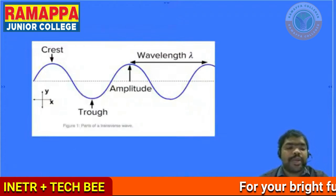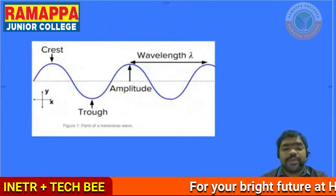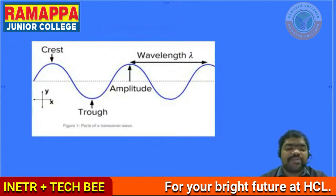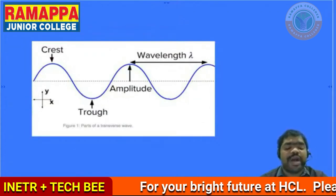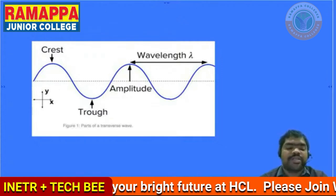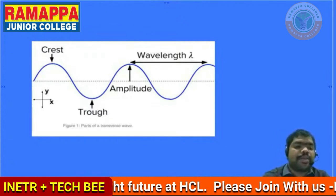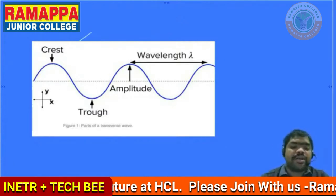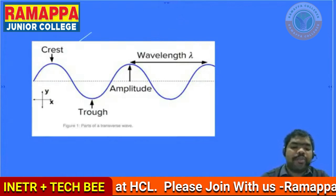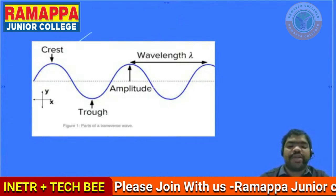Coming to the diagrammatic representation, this is the transverse wave. What are the parts existed in the transverse wave? Here we get the crest, amplitude, trough and wavelength.